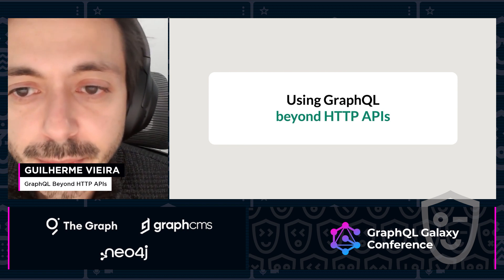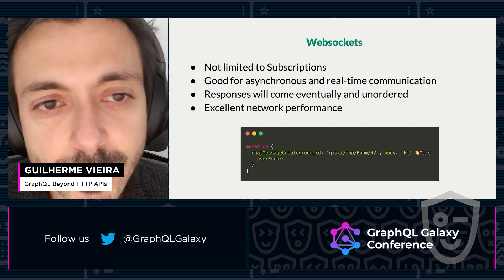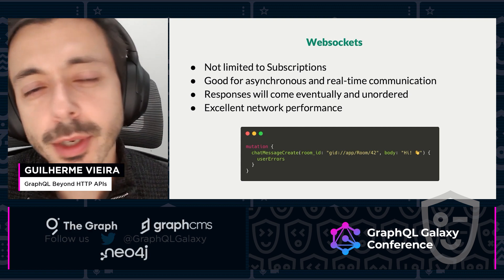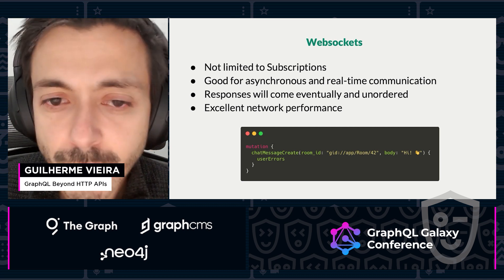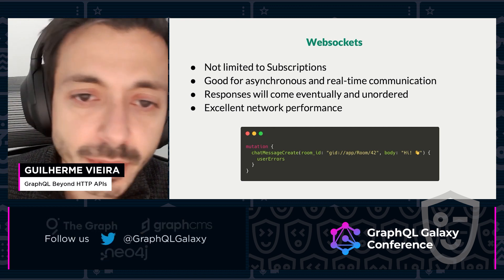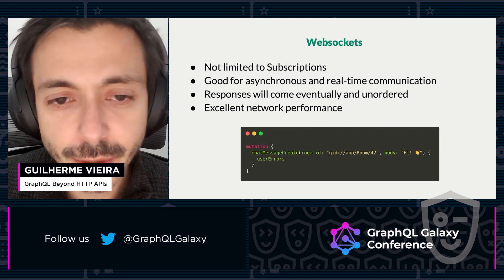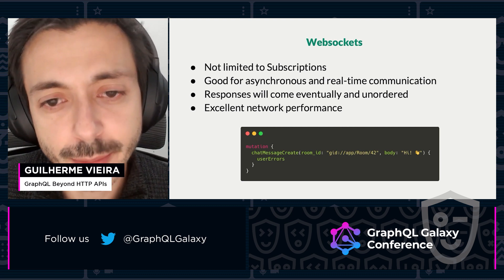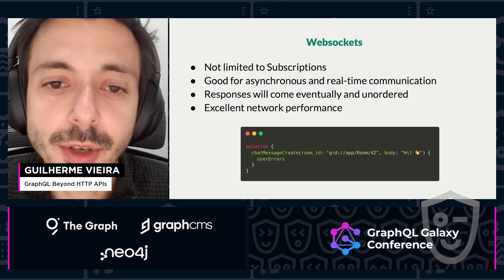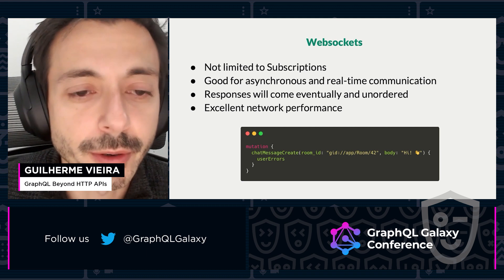Let's get to know some GraphQL use cases beyond HTTP APIs. The first example is WebSockets. Subscriptions is a very common use case of GraphQL using WebSockets, but we are not limited to that. We can use WebSockets for any kind of real-time communication or asynchronous communication where you send a query or a mutation and you are not expecting to get a response right away, or if you are sending several queries or mutations, you are not expecting to get the response in the same order you submitted. Because WebSockets keep open connections, it's very performant and very suitable for real-time messaging.